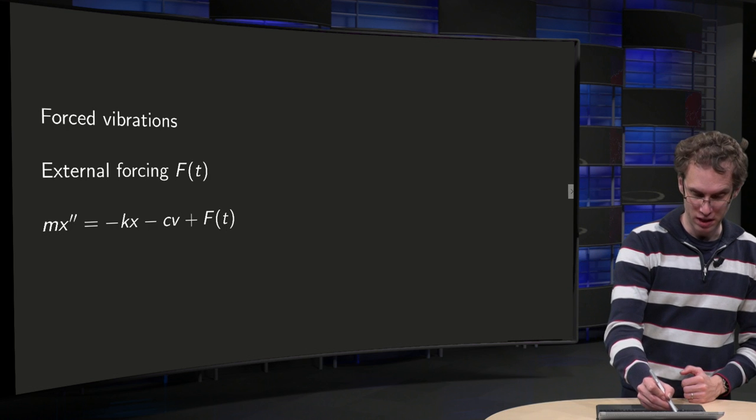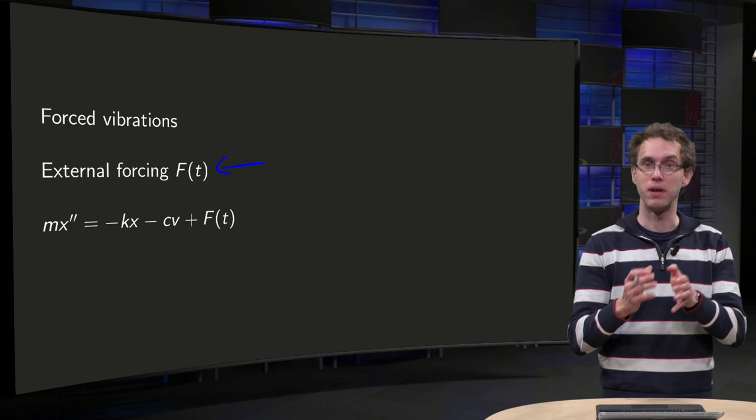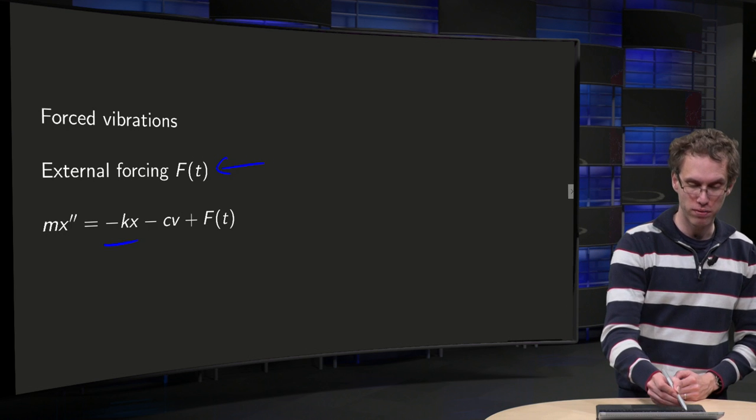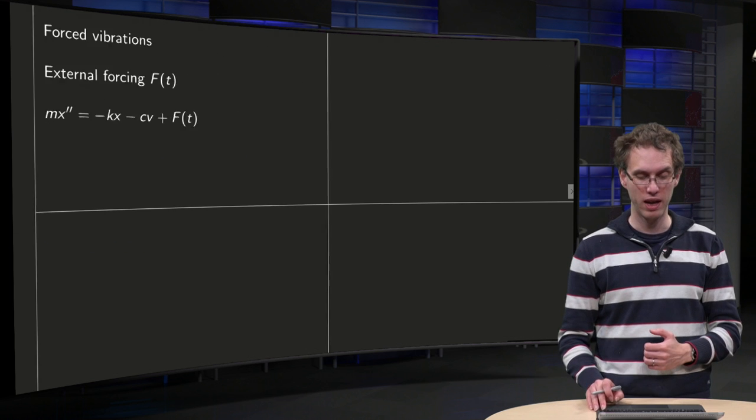So we add some external forcing F(t), so our equation becomes m times a equals f total: spring force, friction force, and now an additional term with the external forcing.